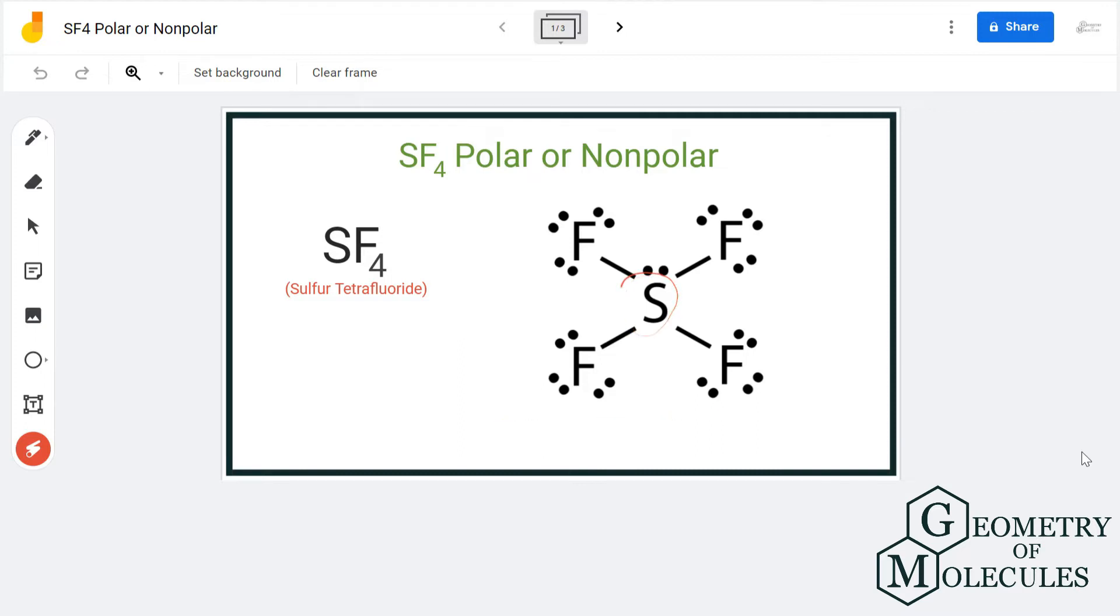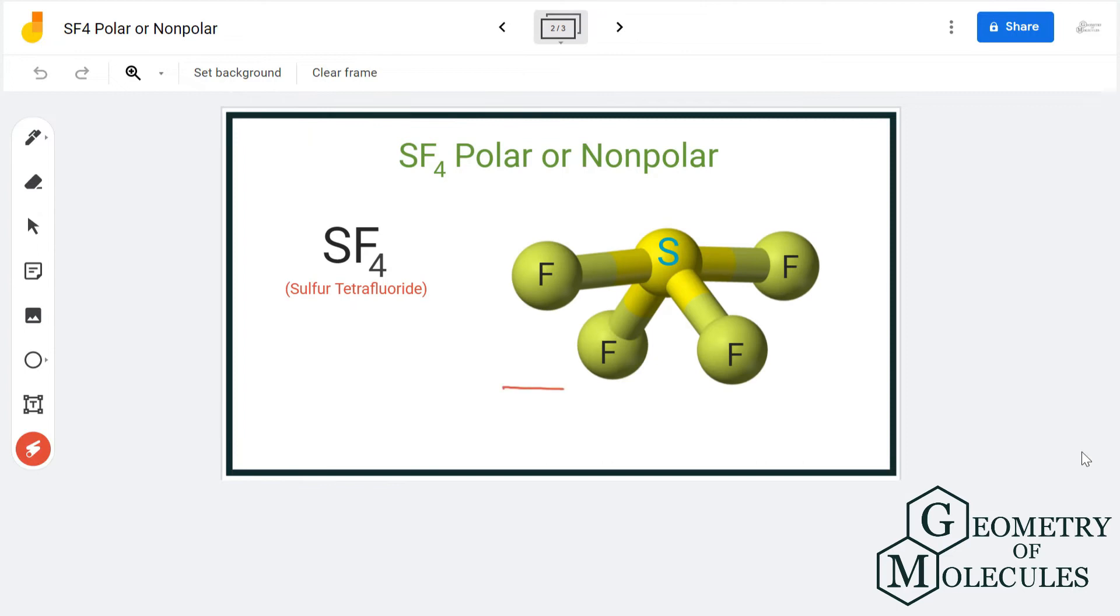And all the fluorine atoms are arranged around sulfur like this. So they are forming a seesaw shape if you see it in 3D. So here you can see that it is forming a seesaw shape. So as mentioned, fluorine is more electronegative than sulfur atom.